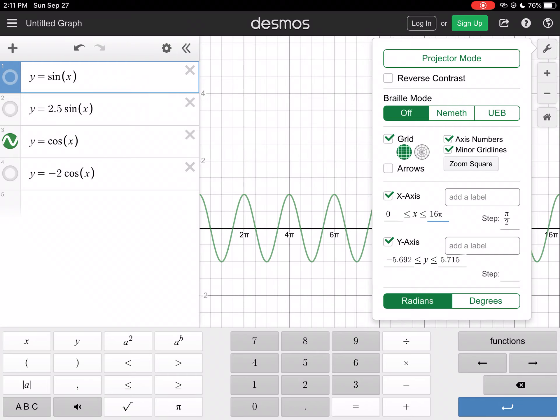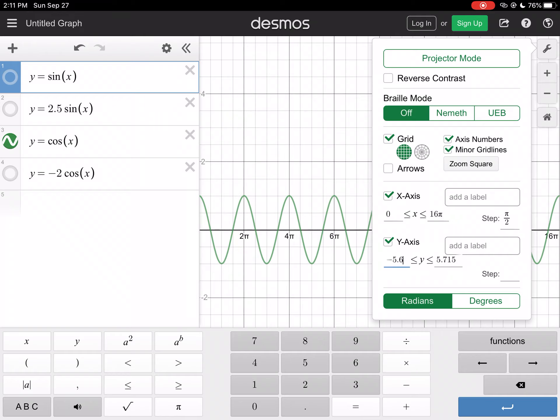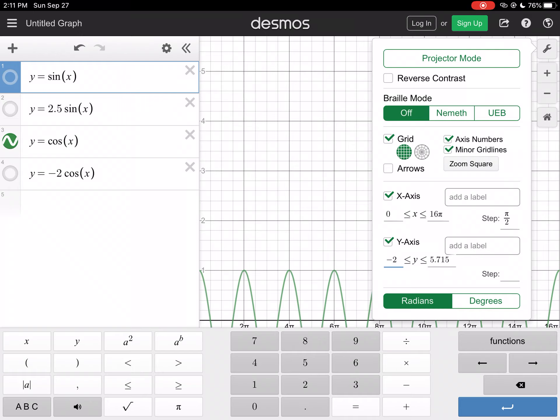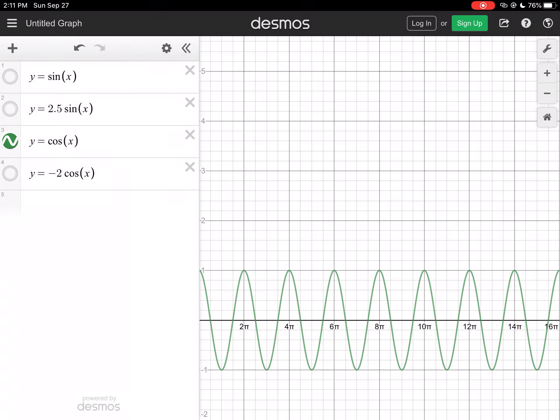And I'm still going to have π over 2, and I think I'm going to go from negative 2 to positive 2.